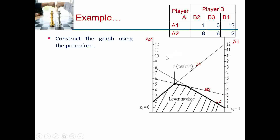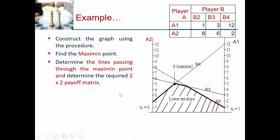After getting all strategy lines, we look for the maximum point. First we mark the feasible region, which is the lower envelope formed by joining the minimum points. Player A wants to maximize his minimum gain, so we pick the maximum point from this lower envelope. The two lines passing through this maximum point are B3 and B4, which give us the required 2×2 payoff matrix by eliminating the B2 strategy.